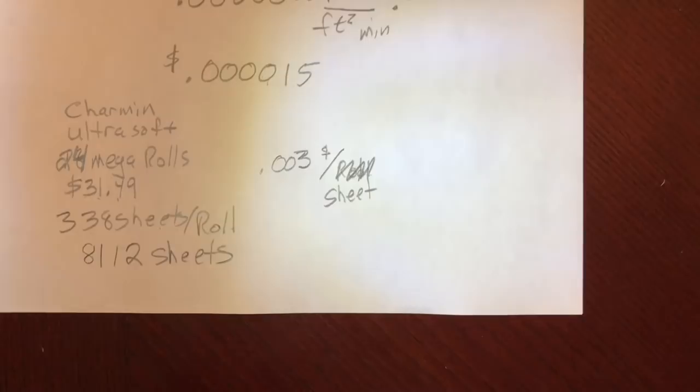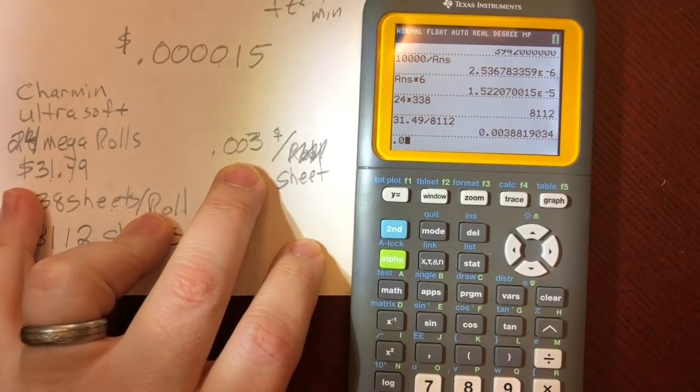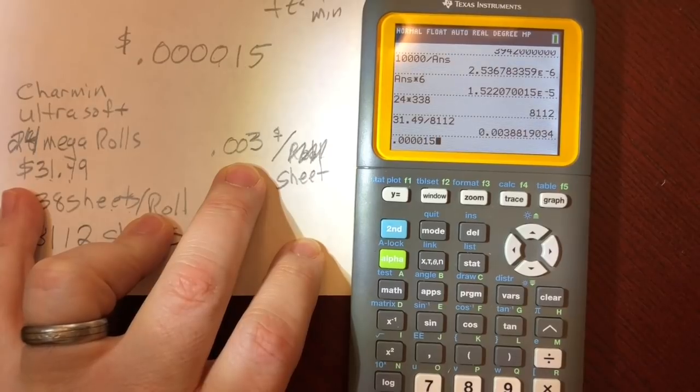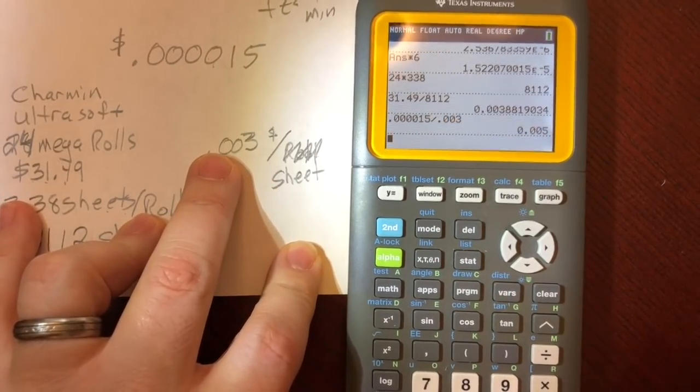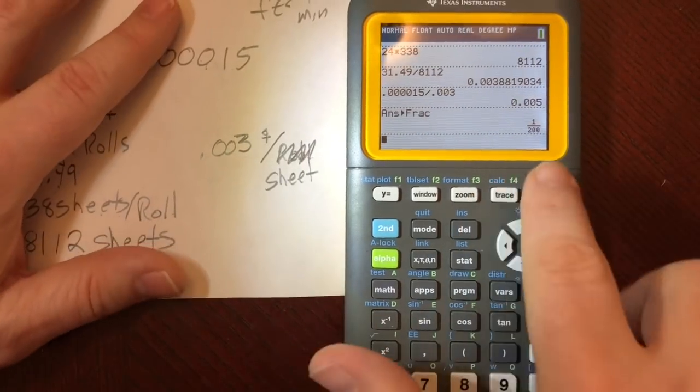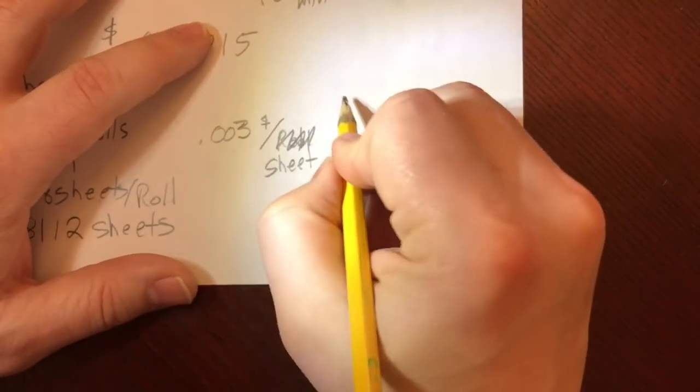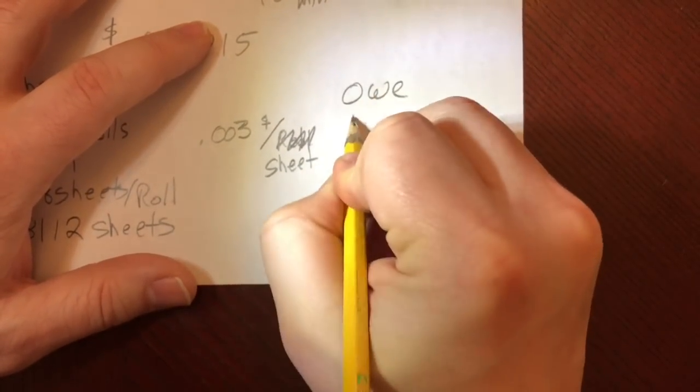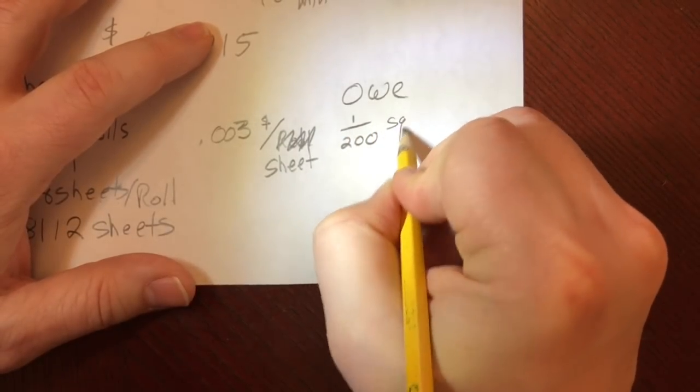So I owe him this much in dollars per sheet. If I divide 0.0000015 divided by 0.003, I end up with... I have to give him 1/200th of a square. So I owe 1/200th of a square.